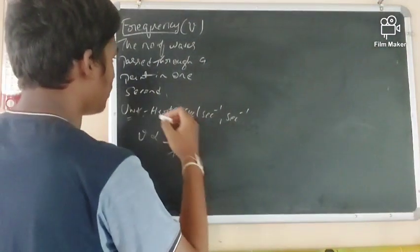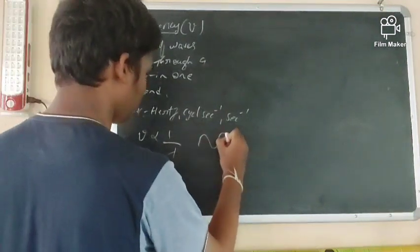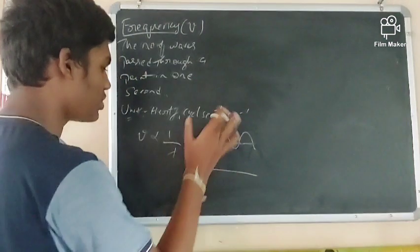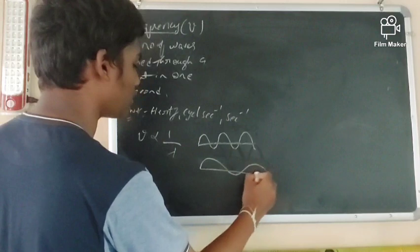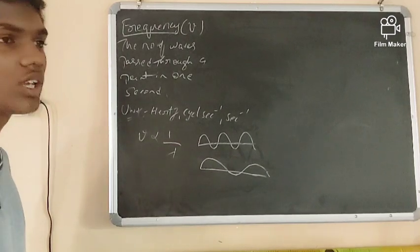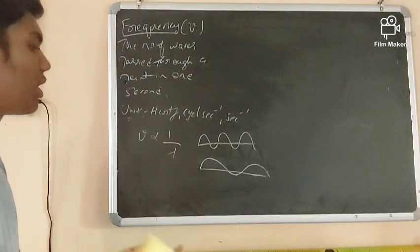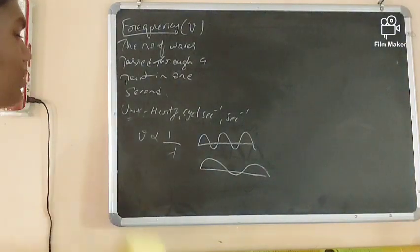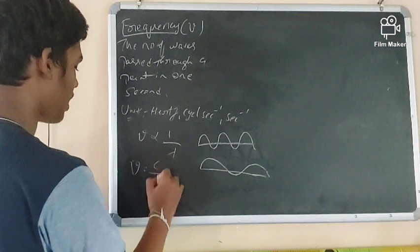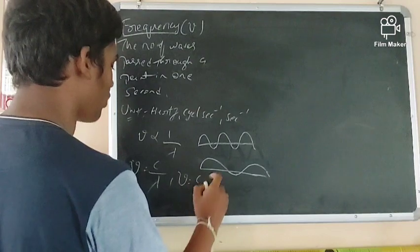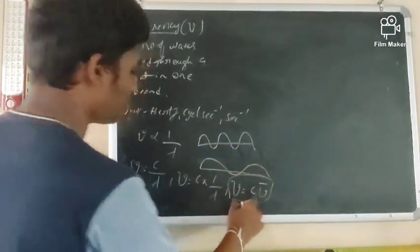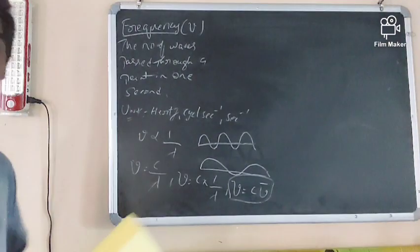Frequency is the number of waves passing through a point in one second. Waves with shorter wavelength have higher frequency. Waves with longer wavelength pass fewer cycles through the same distance, so frequency is inversely proportional to wavelength. We can write ν = c/λ, and since 1/λ is wave number, ν = c × ν̄.